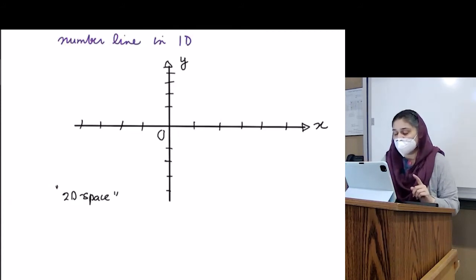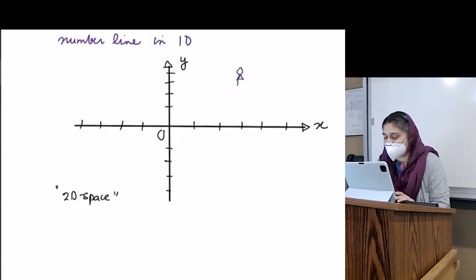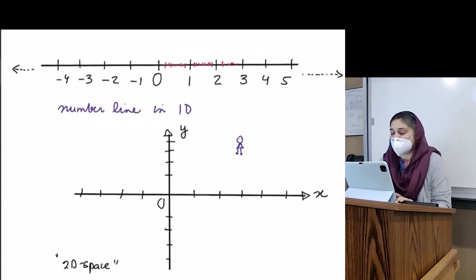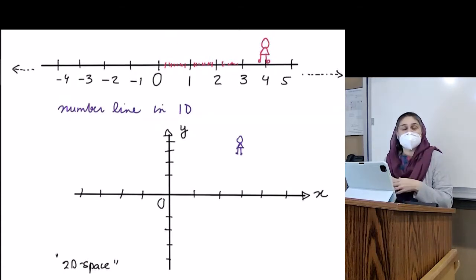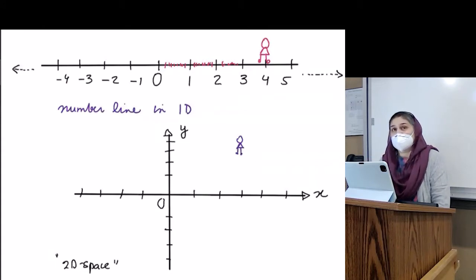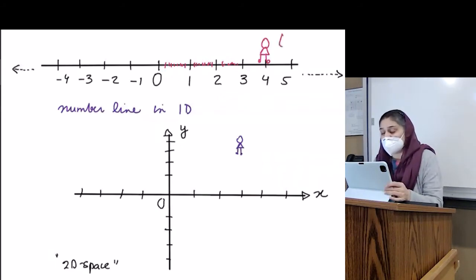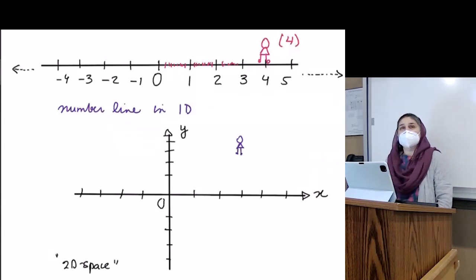So if I was to draw a person standing here. Let me go back to this one. Let me do a person standing here. So how do I tell somebody that this person is where on this number line? You could use the space that she's standing at and the numbers that correlate to this, which would be coordinates. So this would be just... this person is at 4.